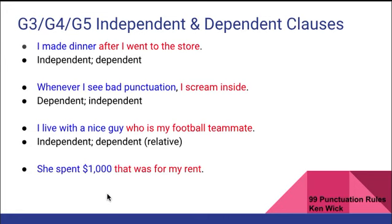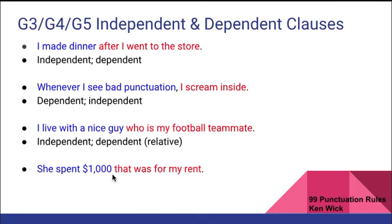The last example: 'She spent $1,000; that was for my rent.' You have two clauses. 'She spent $1,000' — subject and verb, does not begin with a subordinating conjunction, so it is an independent clause. 'That was for my rent' — subject and verb, and this clause begins with a subordinating conjunction, therefore it is a dependent clause.